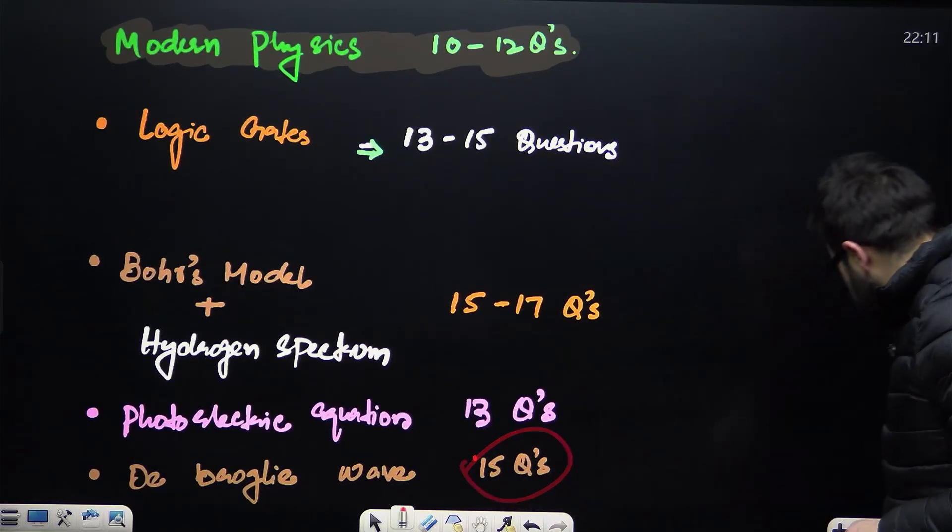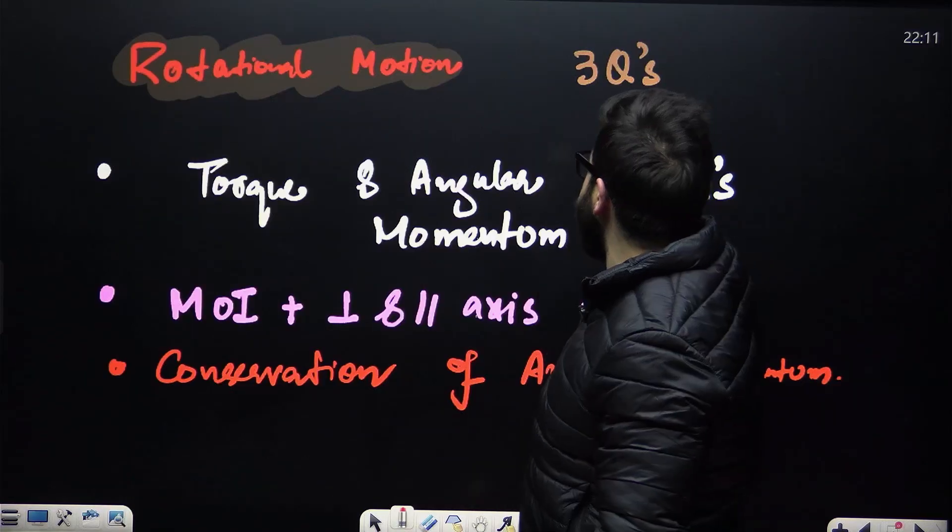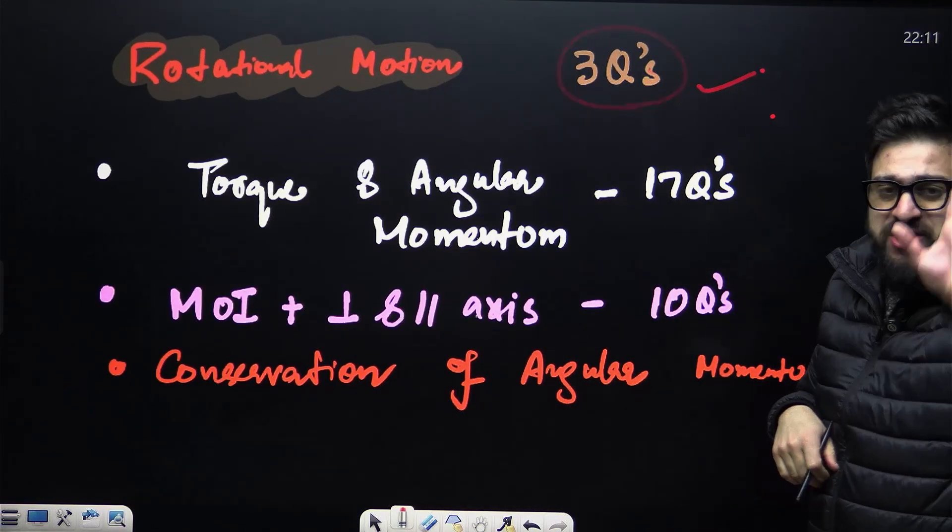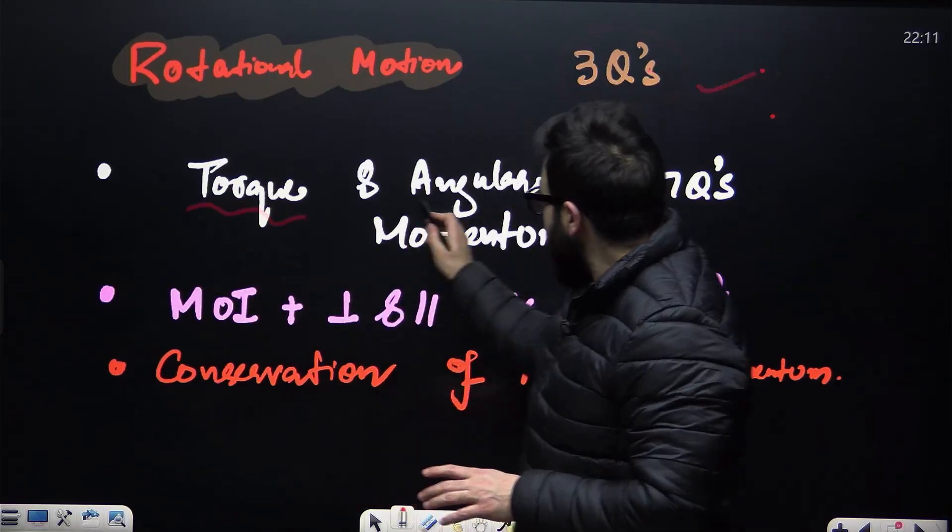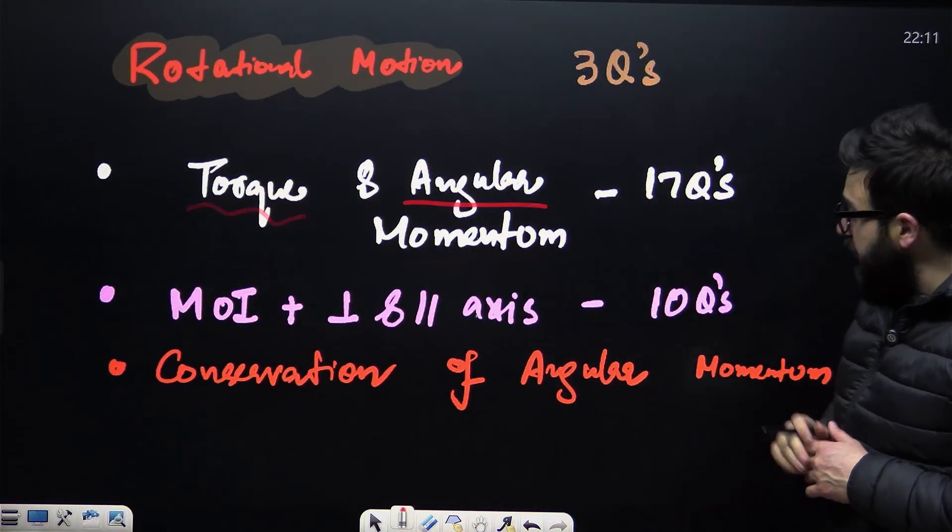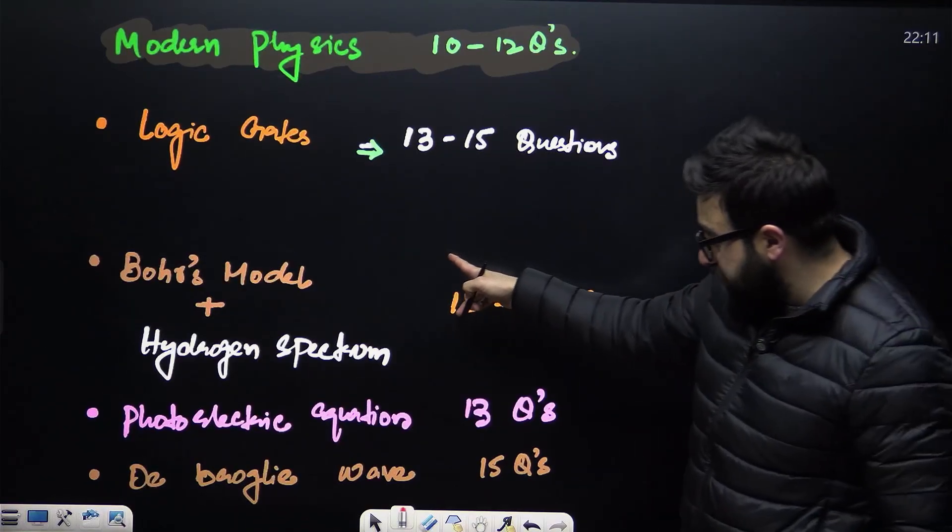And then we say next chapter, that is rotational motion. My dear NEET aspirants, when it comes to the rotational motion, three questions every single year. And in this particular case we say torque, angular momentum, okay. And one more important thing I just want to mention over here.